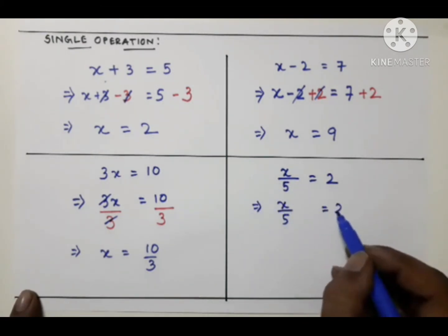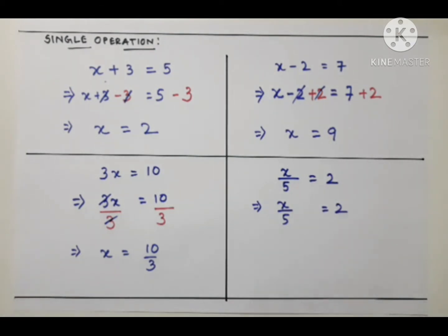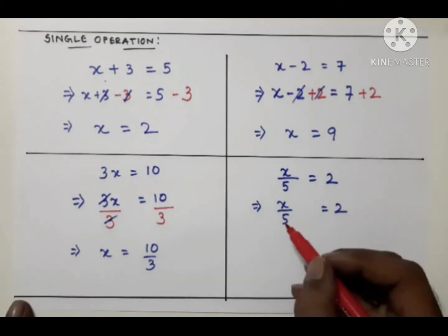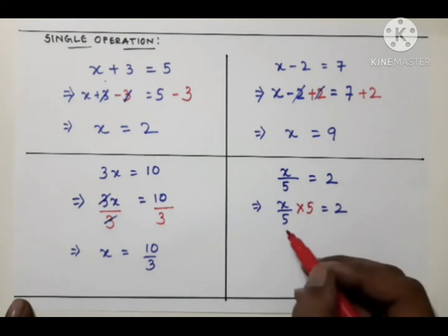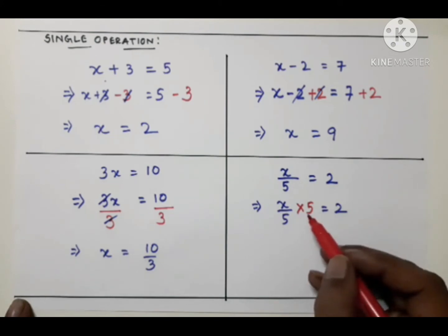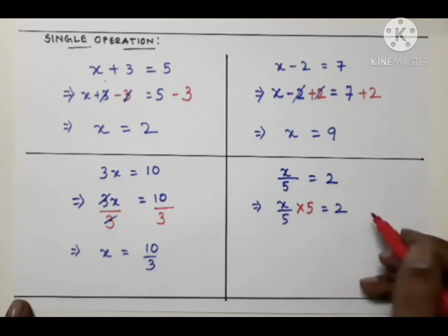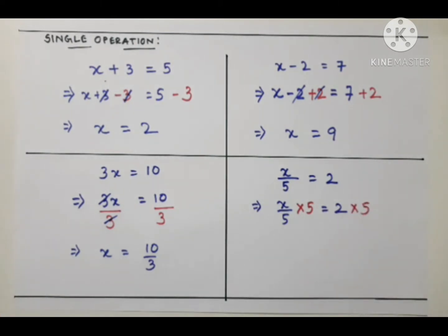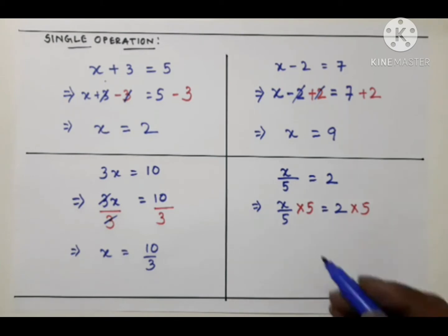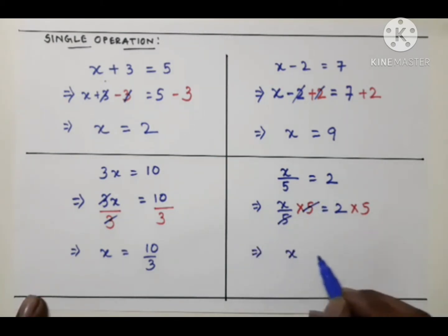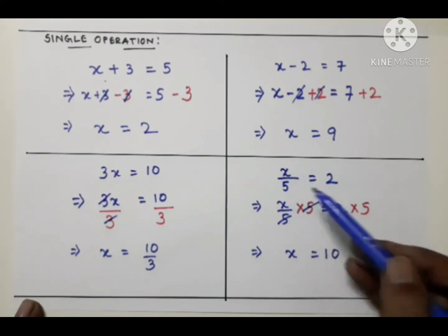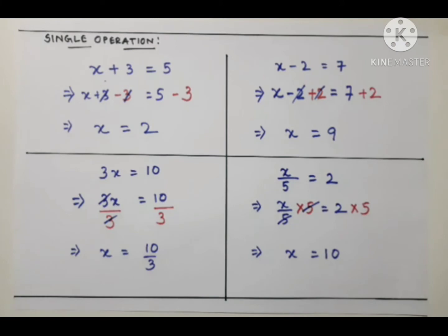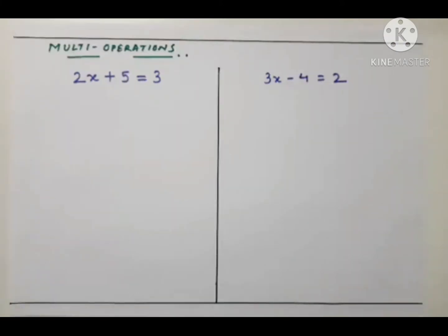Next equation: x/5 = 2. Write down the equation. Here x is divided by 5, so the inverse operation is multiplication. We multiply both sides by 5. The 5s cancel on the left, giving x = 2 × 5 = 10. Verification: 10/5 = 2. Answer verified. x = 10 is the solution.